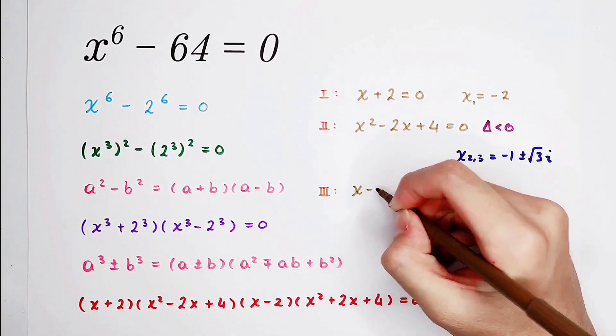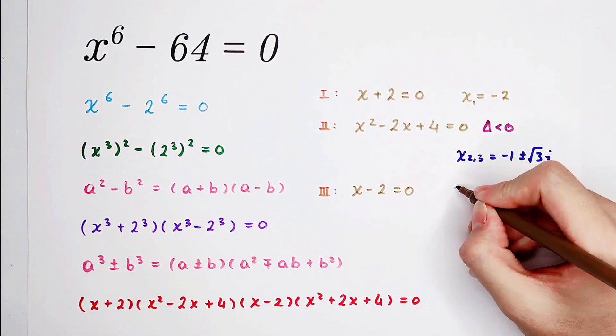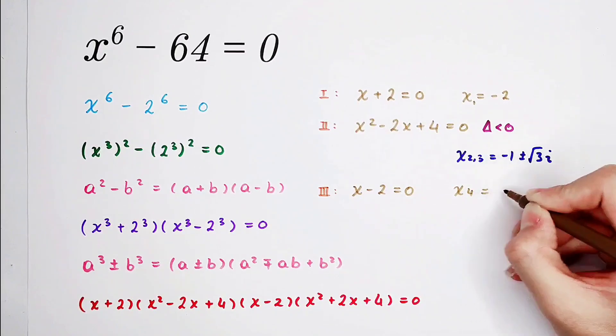In our third case, x minus 2 equals 0. Here we get x4 is 2.